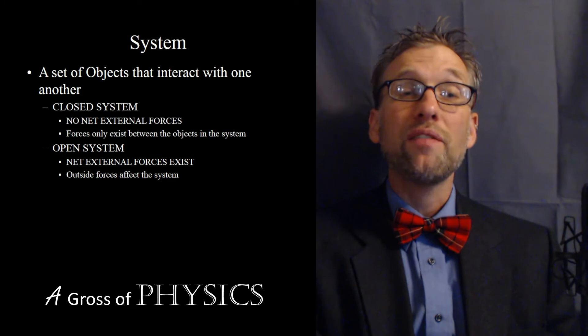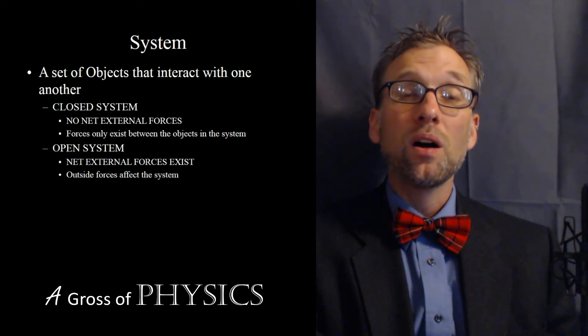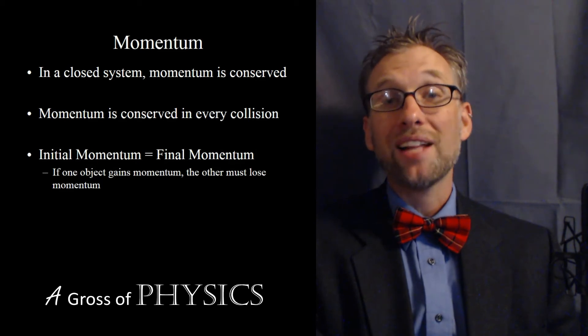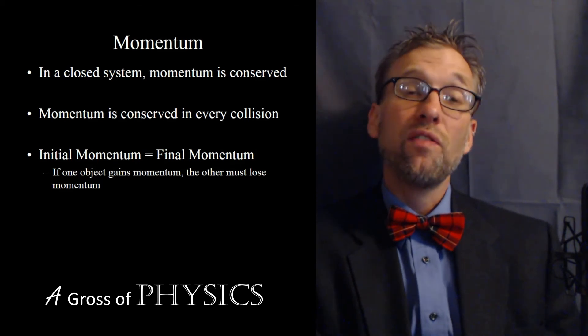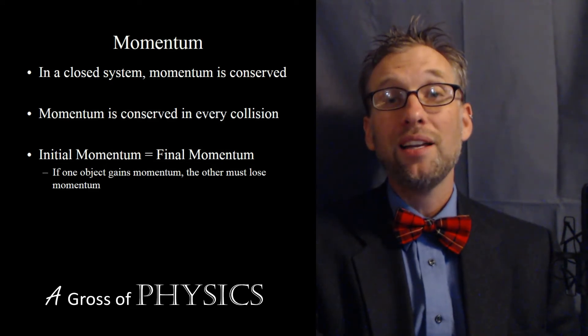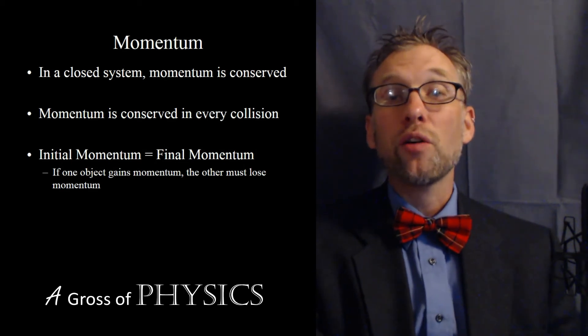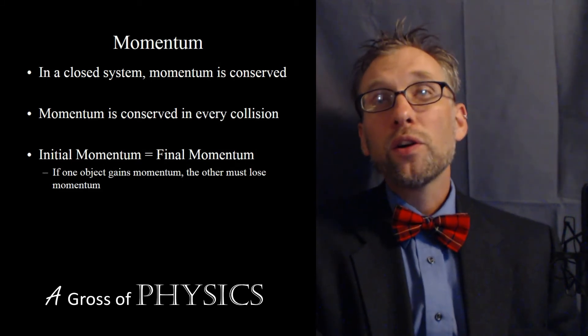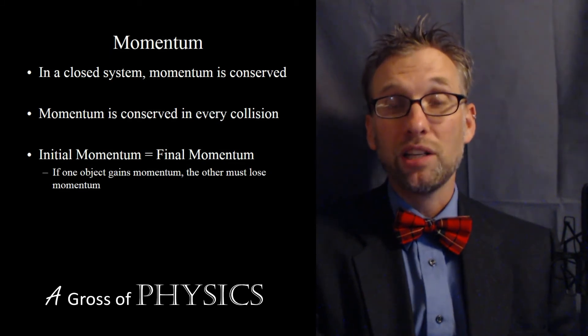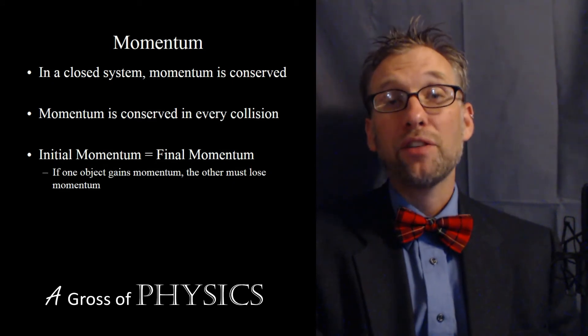On the other hand, if we have a closed system where the two objects are the only objects in the universe, and they are the ones that are interacting with each other and only one another, then we can consider the momentum of that system conserved. And when we have conservation of momentum, that really means that the total momentum before they collide is the same as the total momentum after they collide. All they're going to do is share the momentum between them. Unfortunately, it's not as simple as just dividing by two all the time and just averaging the momentum. In fact, what we need to do is calculate what will happen after the collision.